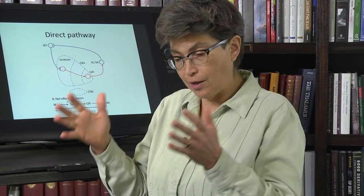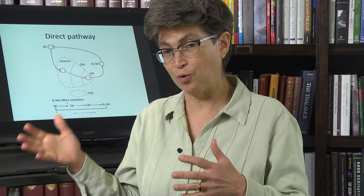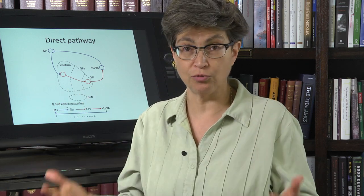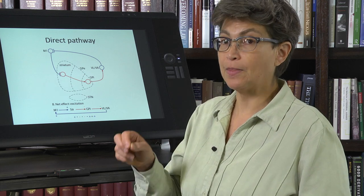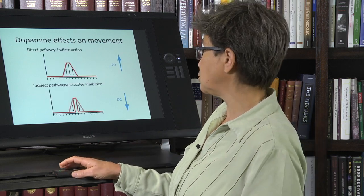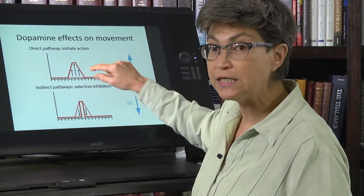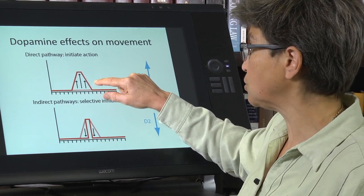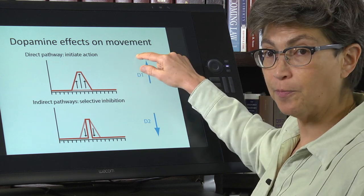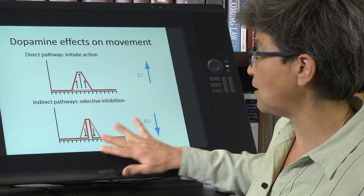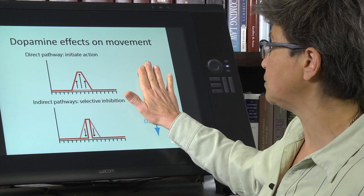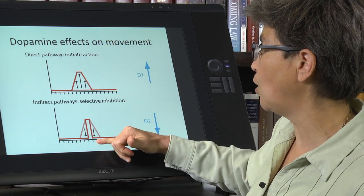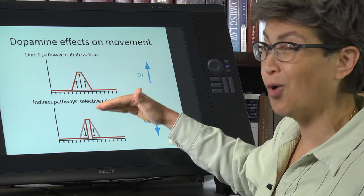What happens in Parkinson's? Parkinson's is a problem where there's no more dopamine. And the direct pathway is no longer working because dopamine has very specific effects on the direct and indirect pathways. The direct pathway, which is used to initiate and release movement from default suppression, is facilitated by dopamine via D1 receptors. The indirect pathways are suppressed by dopamine via D2 receptors. If you lose dopamine altogether, you've lost this facilitation and you've lost the inhibition, so you get less direct pathway and more indirect pathway.